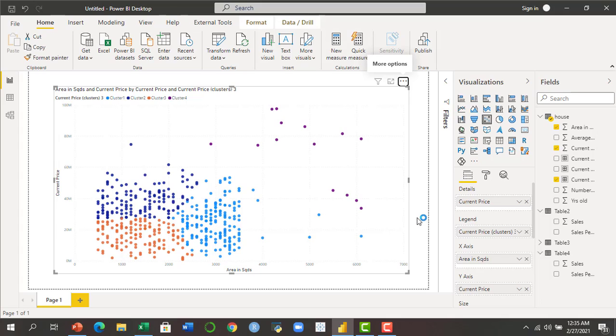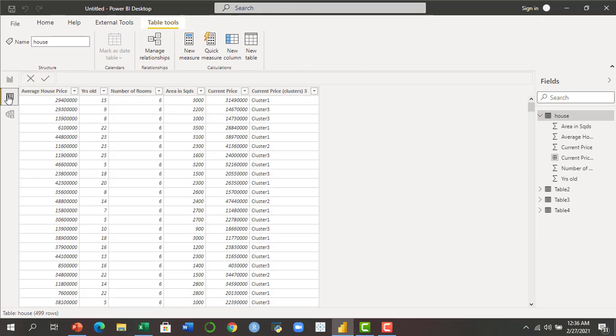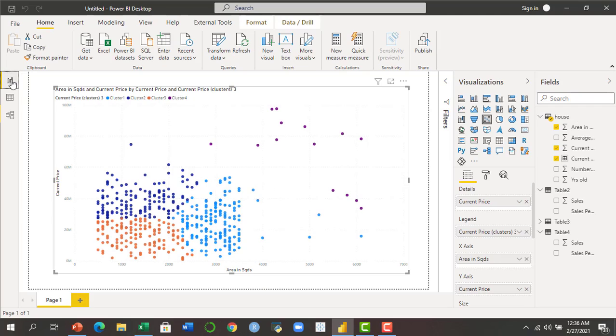And now you can see that within a few seconds there are four different clusters available. If we go to the data view, you will find one additional column has been added in which you will see cluster one, cluster three, cluster two. According to the groups, the cluster has been applied in this application. So we have defined four clusters.